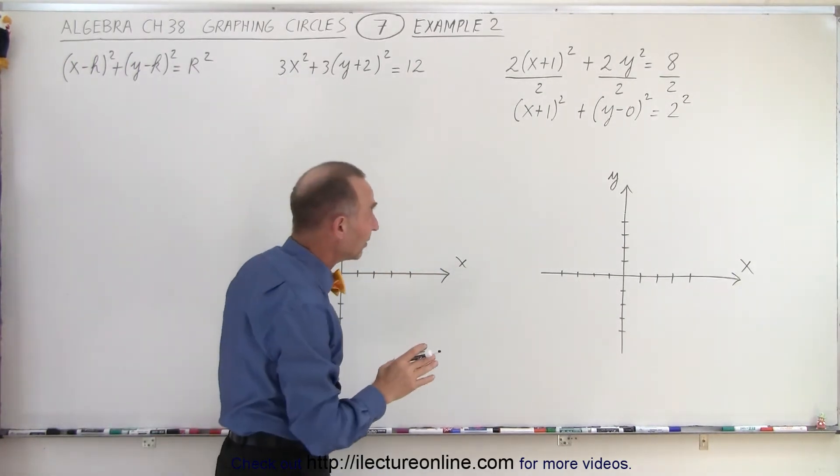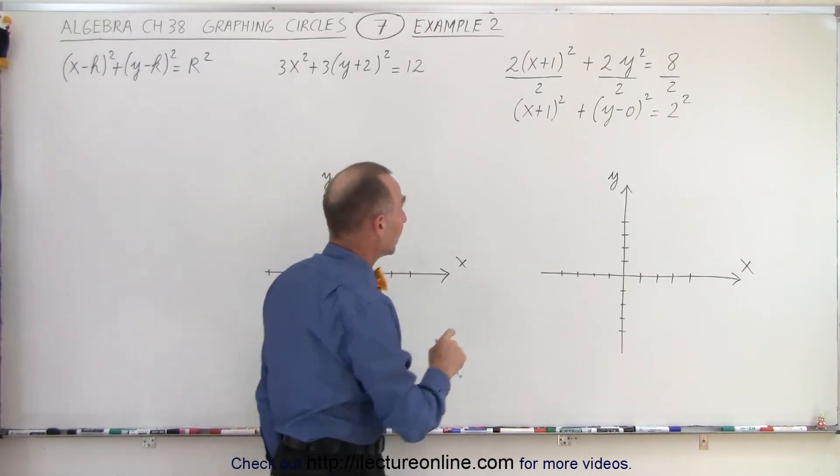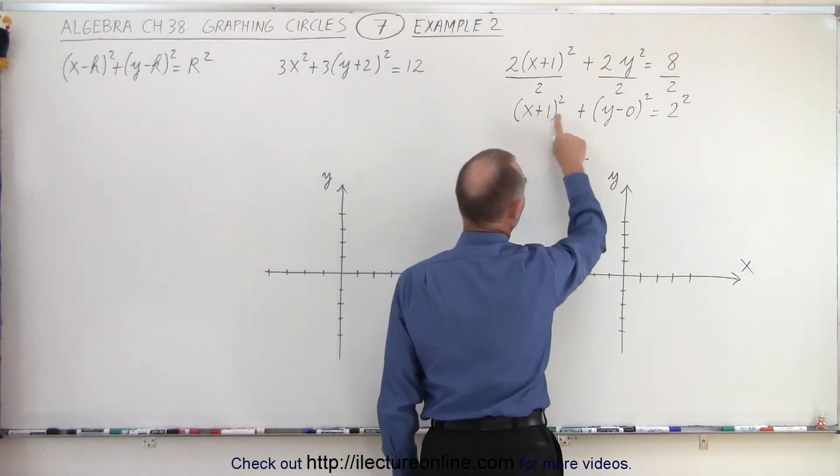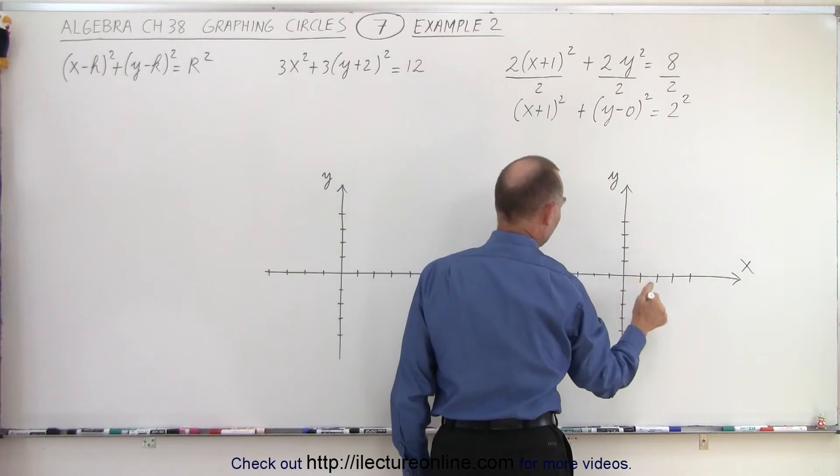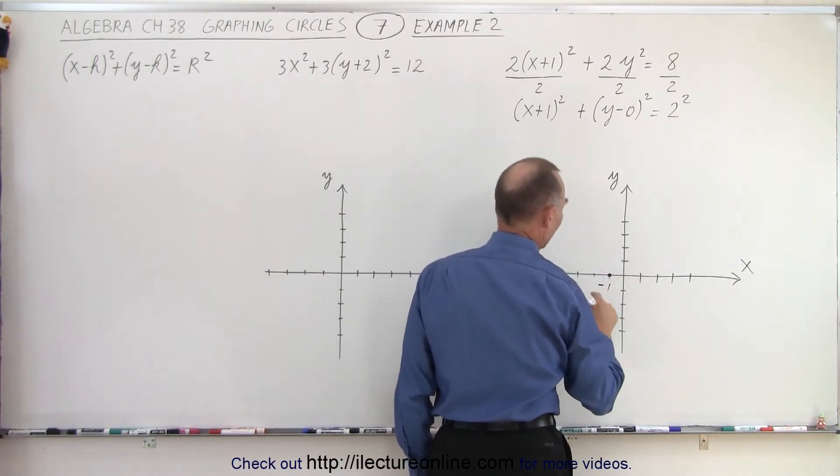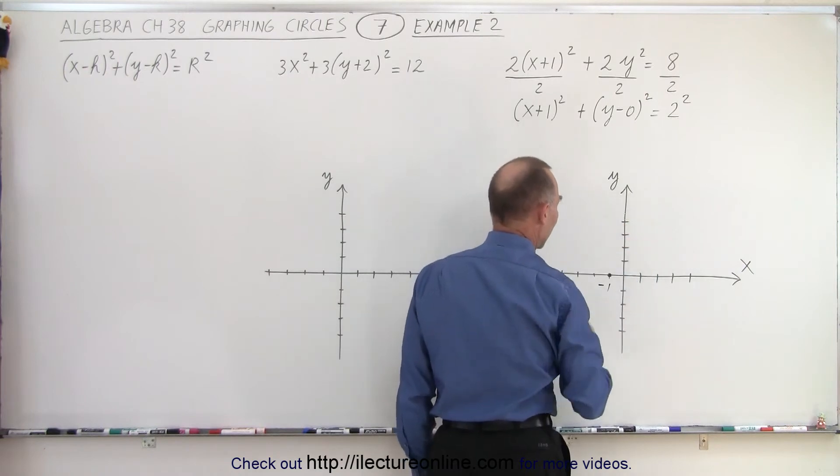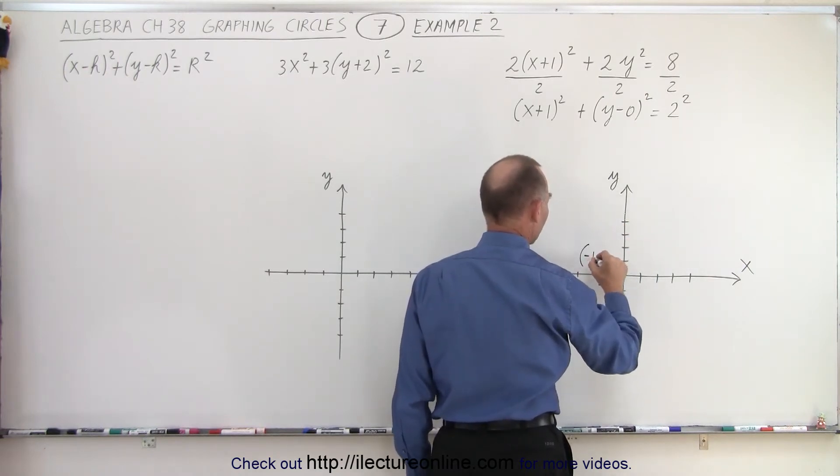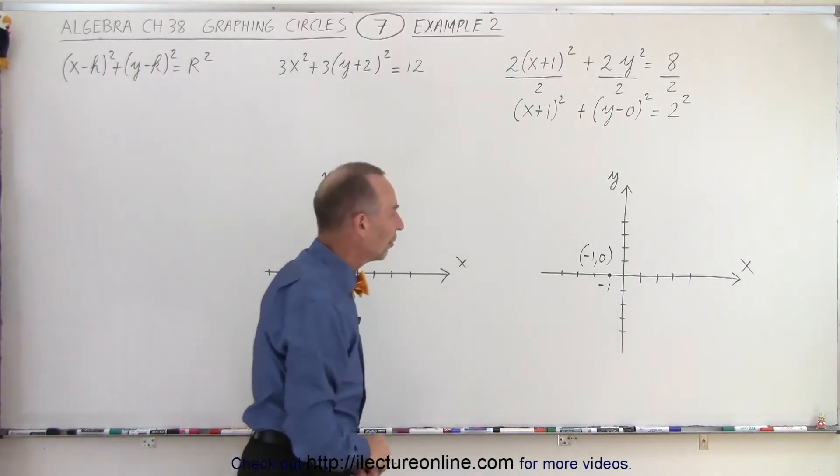So first we find the center of the circle. Here we can see that it's shifted to the left by 1 and here it's not shifted in the y direction. So in the x direction it's shifted to the left by 1, negative 1, in the y direction it is not shifted. So the center of the circle is at (-1, 0).